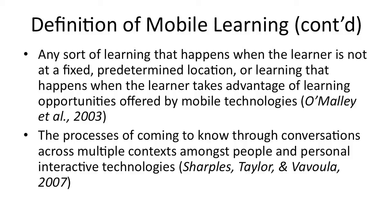O'Malley and colleagues in 2003 say mobile learning is any sort of learning that happens when the learner is not in a fixed predetermined location — so the learner is mobile, they move around, and learning happens when the learner takes advantage of opportunities offered by mobile technologies. Mike Sharples and colleagues define mobile learning as the process of coming to know through conversation, across multiple contexts, amongst people and personal interactive technologies. According to Sharples, people and interaction are very important for mobile learning.